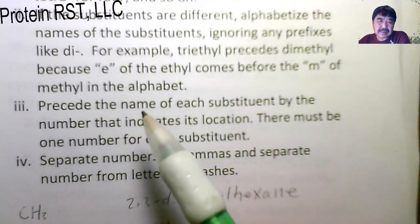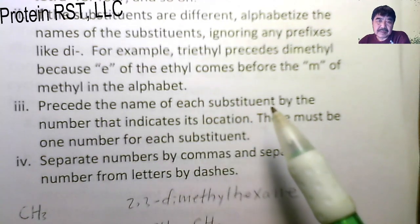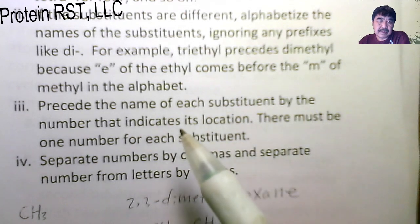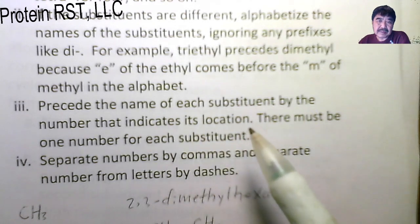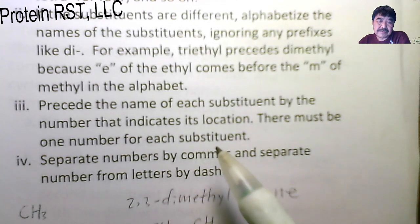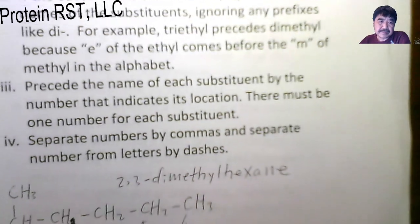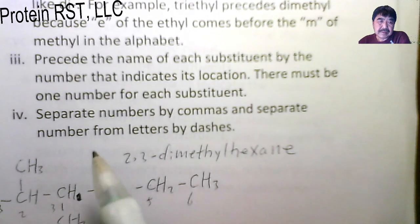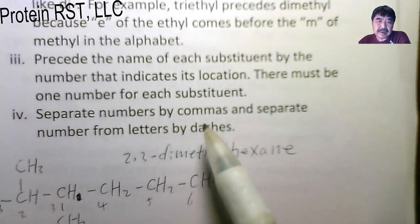Precede the name of each substituent by the number that indicates the location. There must be one number for each substituent. Finally, separate the numbers by commas and separate the numbers from the letters by dashes.